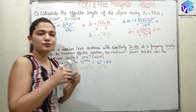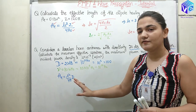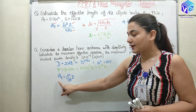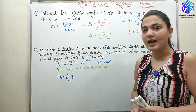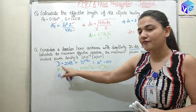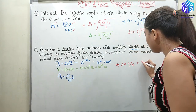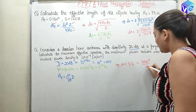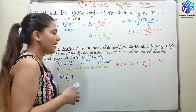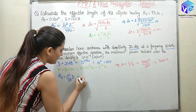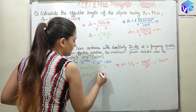We know the formula for effective aperture area in terms of directivity: Ae = D × λ² / (4π). We require directivity and lambda. Lambda can be found from frequency: λ = c / f = 3 × 10⁸ / 10¹⁰ = 3 × 10⁻² meters. Now substituting: Ae = (3 × 10⁻²)² × 100 / (4π).